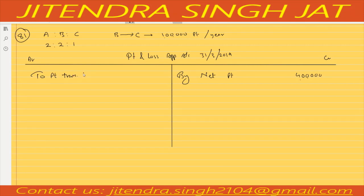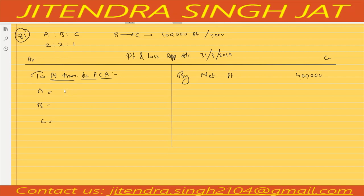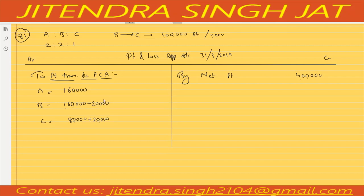Distribute 4 lakh to A, B, and C in the ratio 2 to 2 to 1. Dividing 4 lakh by 5 gives 80,000. So A gets 1,60,000, B gets 1,60,000, and C gets 80,000. But C is guaranteed one lakh, so 20,000 more is required. Since B gave the guarantee, B's profit is reduced by 20,000, making B's profit 1,40,000 and C's profit 1,00,000.